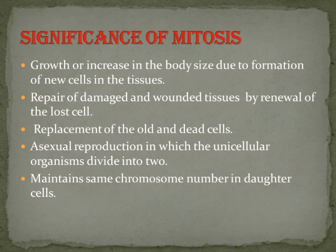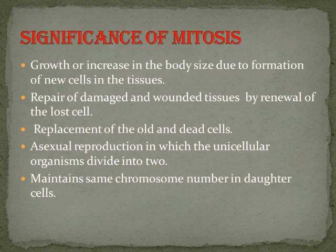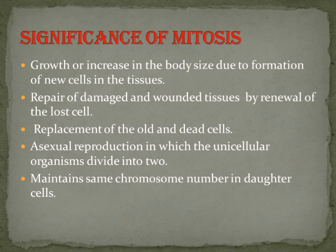Mitosis maintains the same chromosome number in daughter cells. This is why DNA duplication during the S phase (synthesis phase) of interphase is so important — if chromosomes did not double, one daughter cell would get all chromosomes and the other would get none. By duplicating first, the chromosome number is equally divided between the two daughter cells.